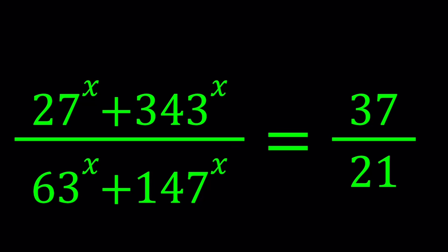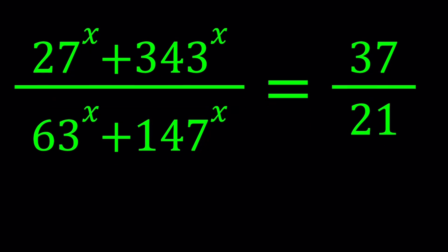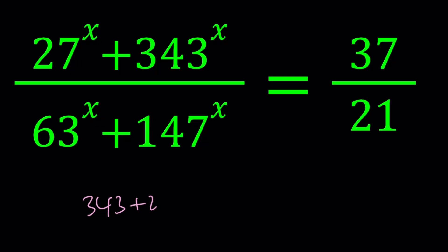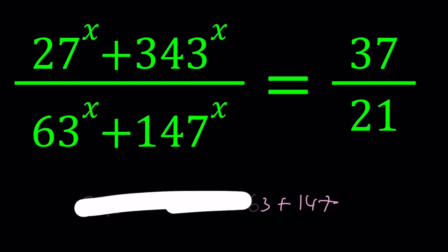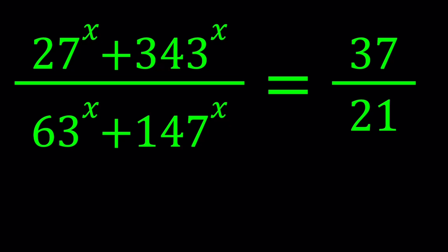One of the things that I notice when I look at a problem like this is I just add the numerators and the denominators. So what is 343 + 27 and what is 63 + 147? That's going to give you an idea about what the solutions might look like, but let's go ahead and solve this problem without guessing.